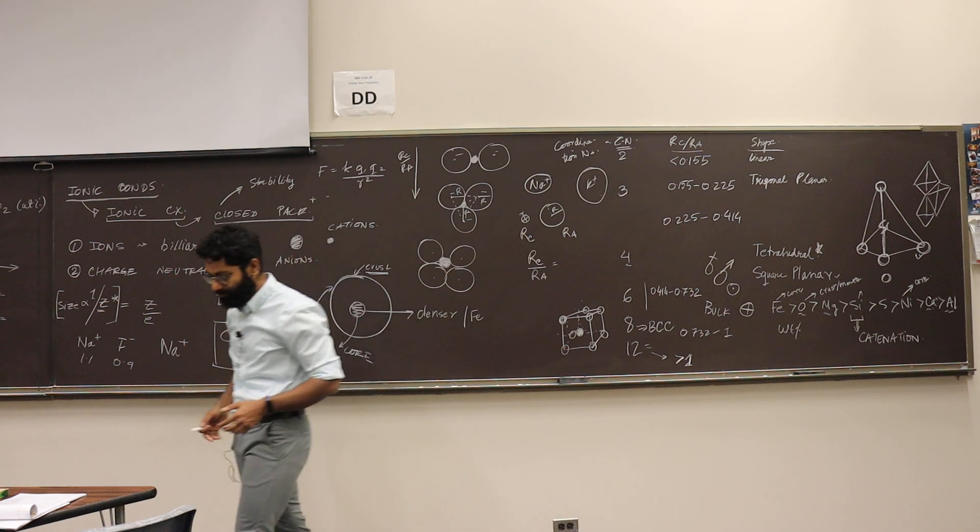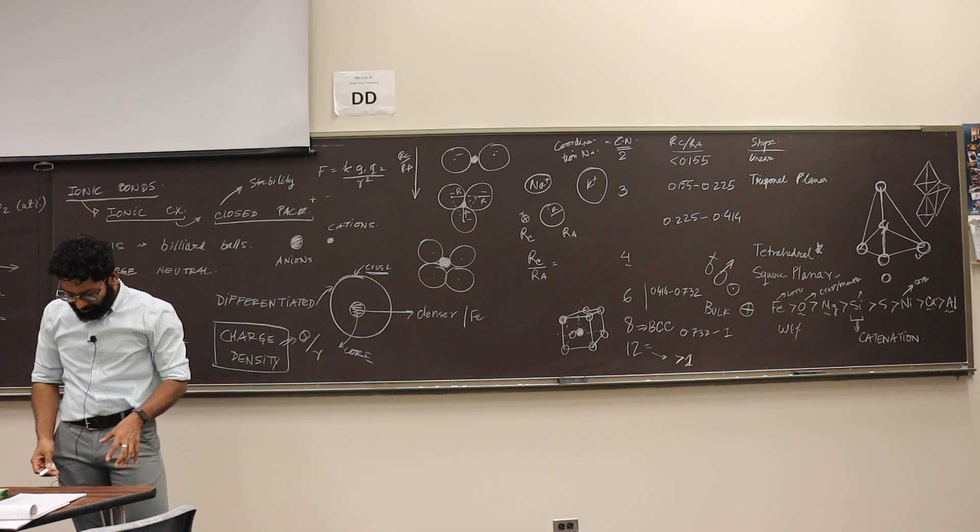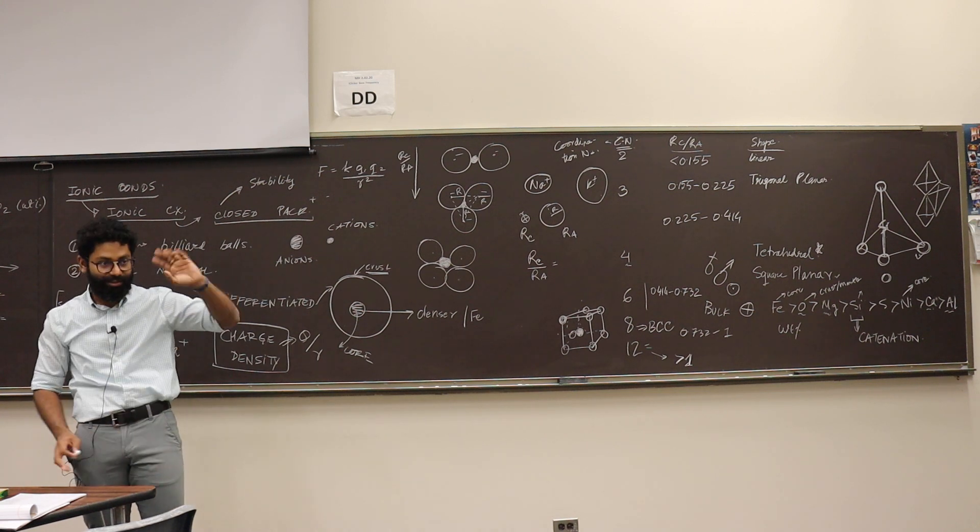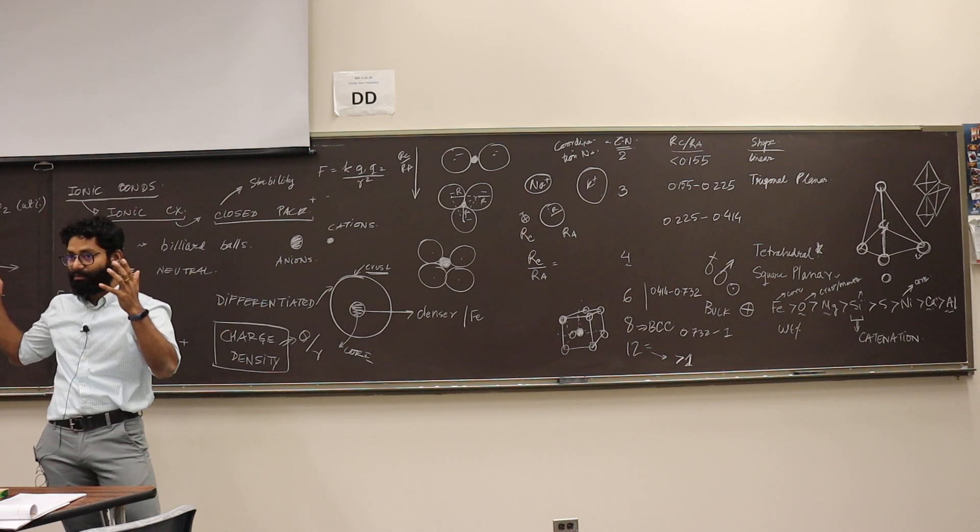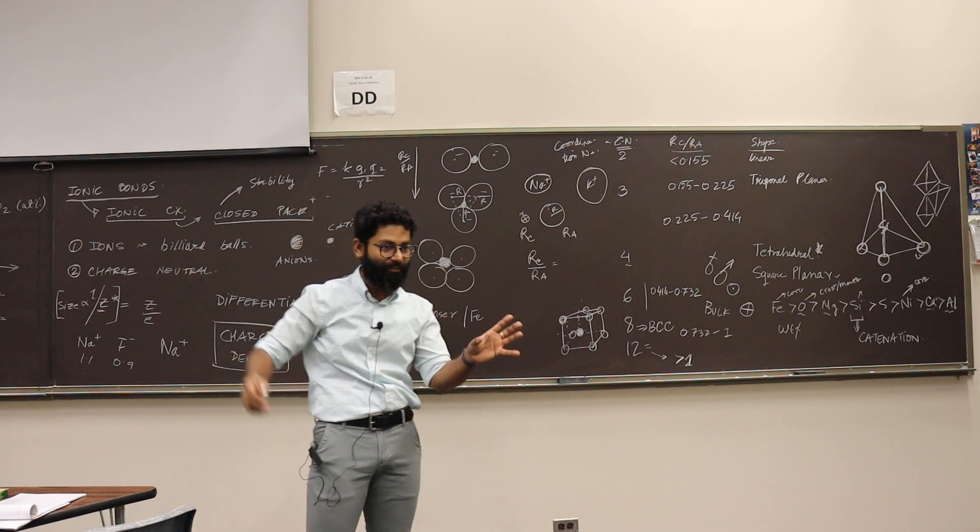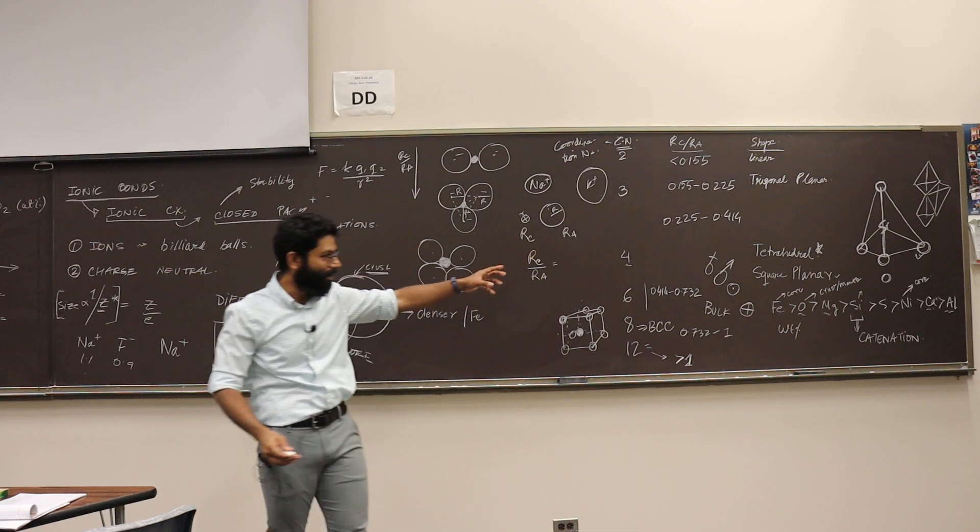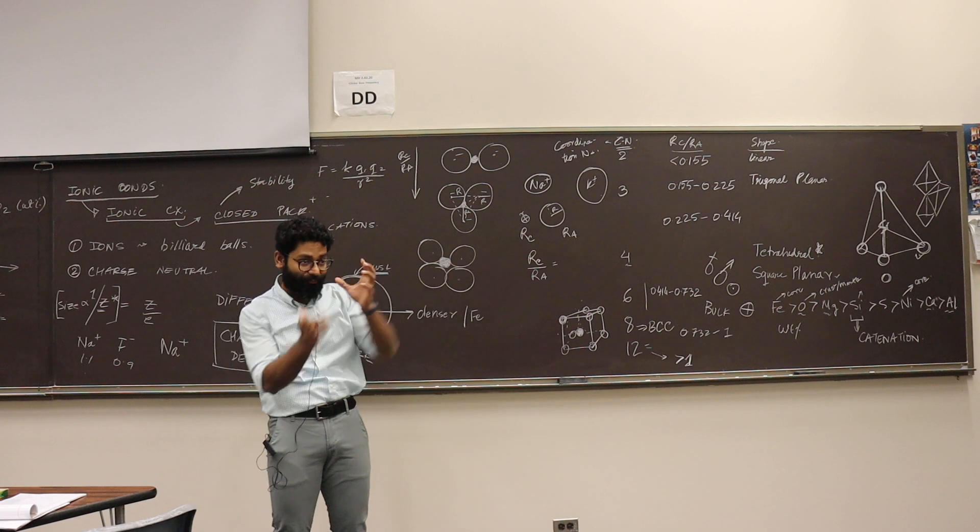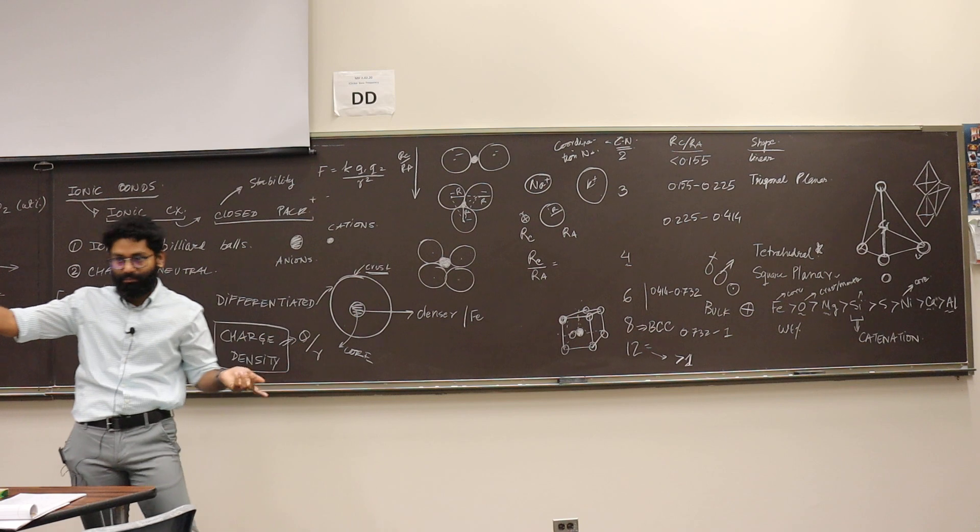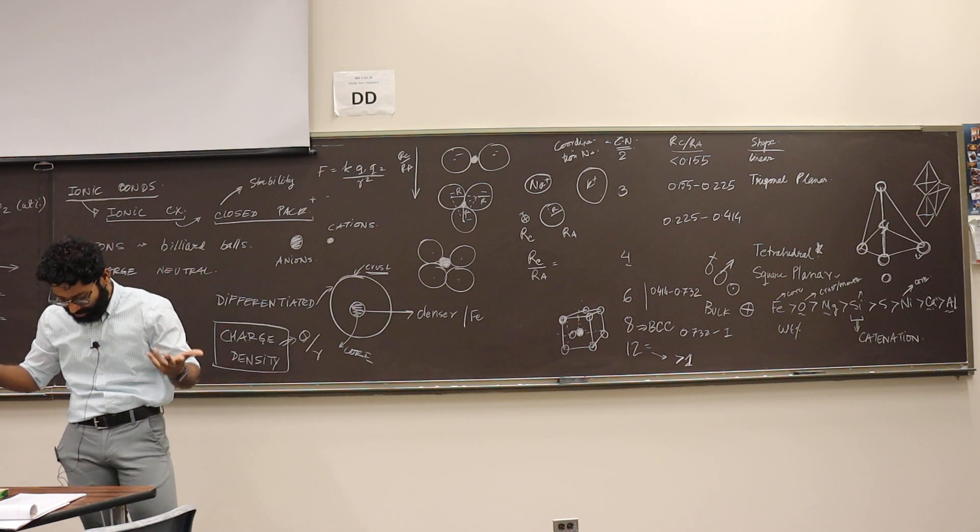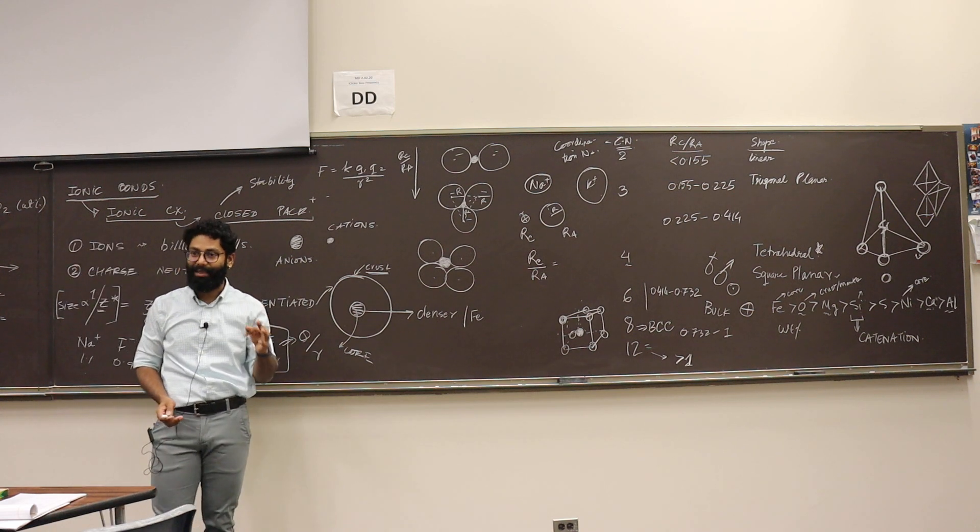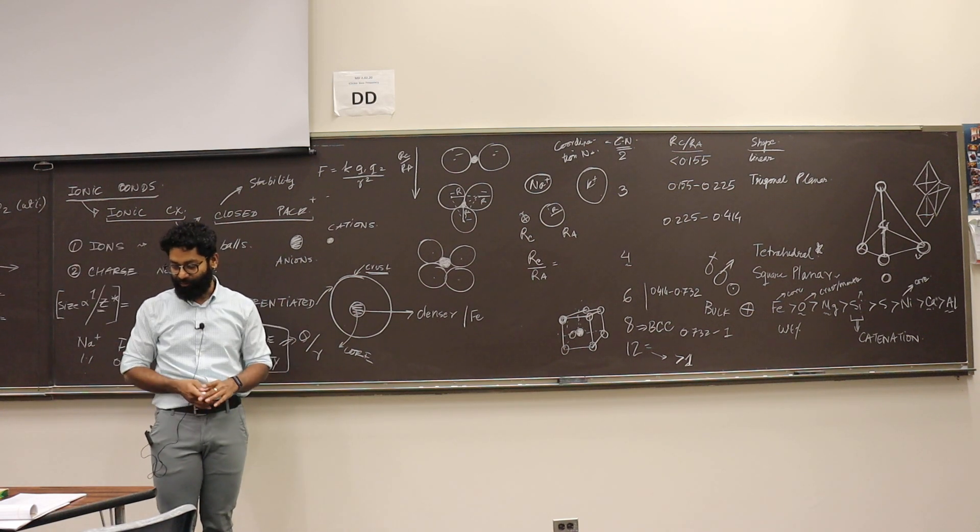Now if there are two competing ions for one site, the higher charge density will get preferred because it will form a stronger bond. So if two cations are fighting for one site, the one that has more charge density is going to be preferred because of the obvious reason—more stable. Now there's this fourth rule that Goldschmidt did not give, but was given later by Ringwood, another great scientist. We have a mineral named after him, ringwoodite.